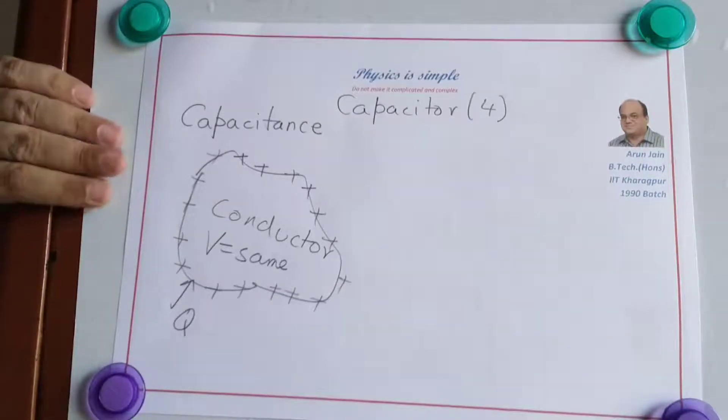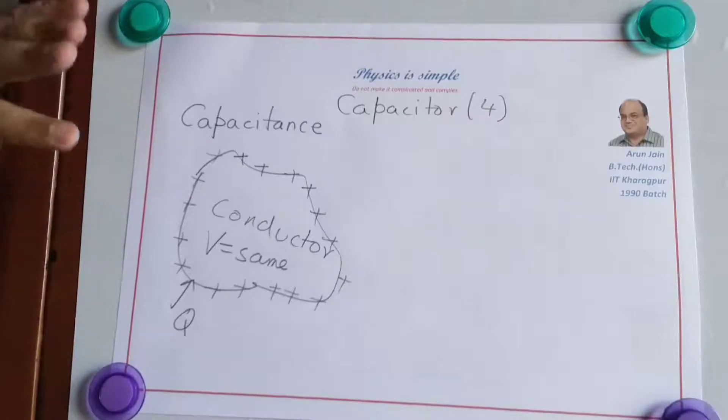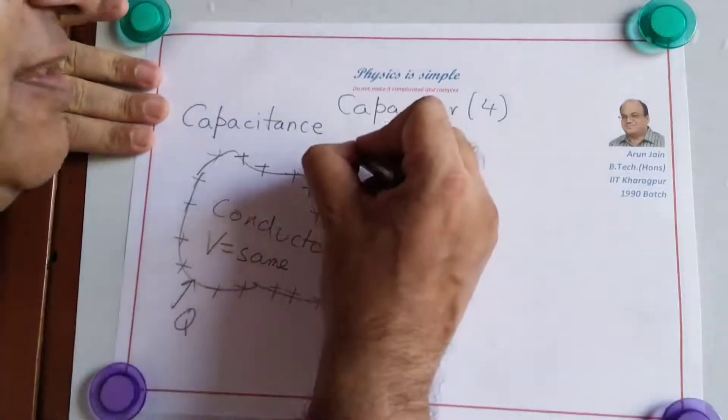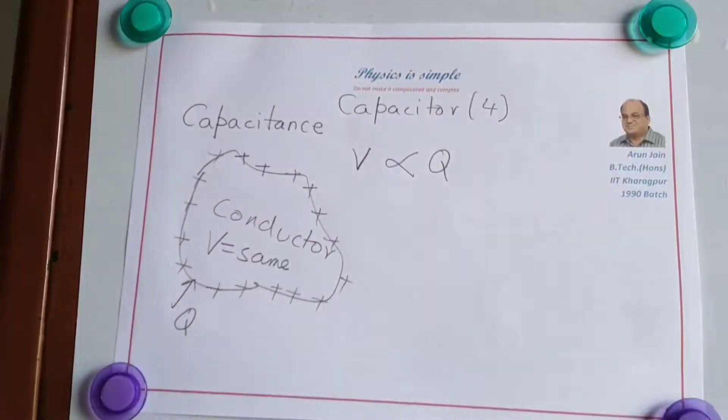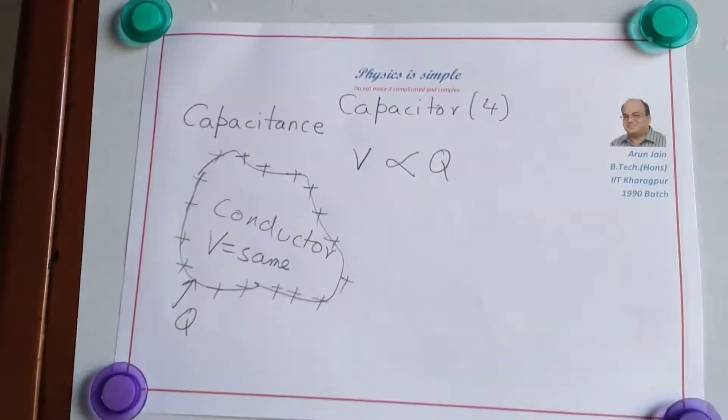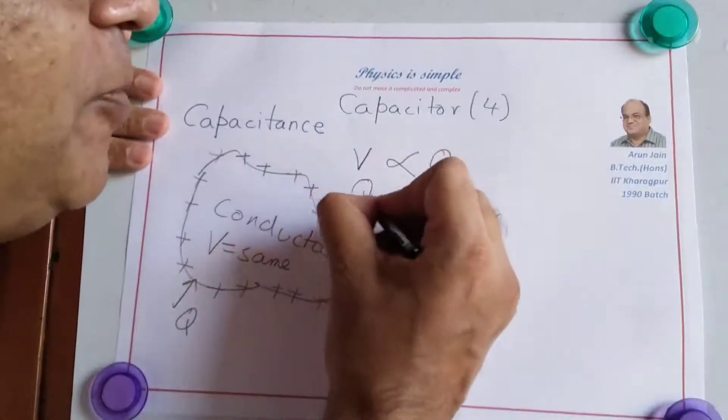Say the potential becomes V. Then this V is proportional to Q. More charge, more V. Less charge, less V. So therefore Q is proportional to V.